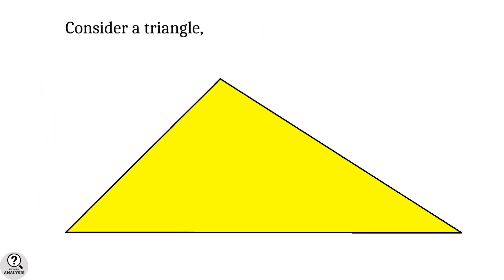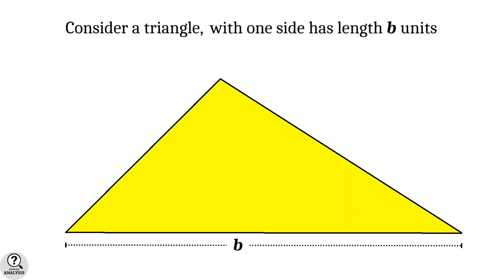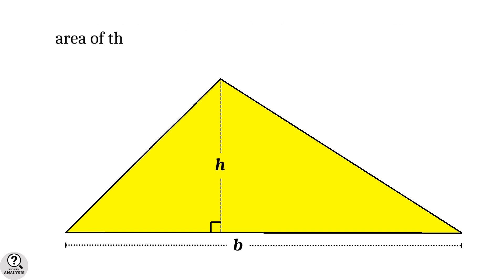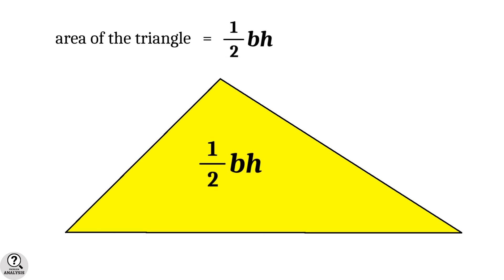Consider a triangle with one side that has length B units. With respect to this side, the height of the triangle is given as H units. Then, as we know, the area of the triangle is half BH. But my question is, why? Why does this formula work for any triangle?